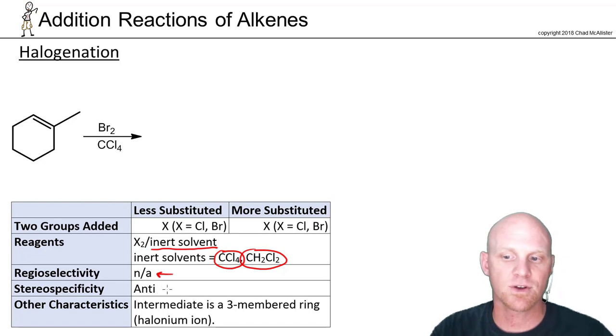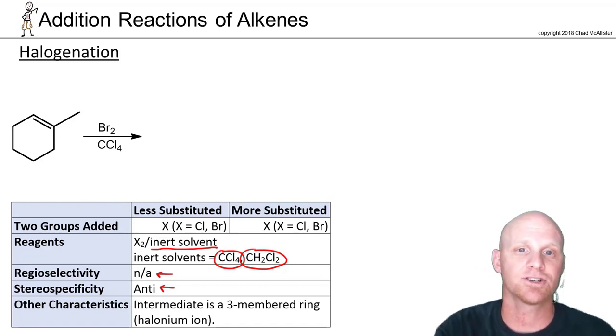We'll find out that this goes through a three-membered ring, which we'll call a halonium ion, specifically a bromonium ion in this case, chloronium ion for chlorine. And that's what's going to lead to anti-addition. You'll recall earlier we said any time you go through a three-membered ring intermediate, when you do backside attack on it, it leads to anti-addition.